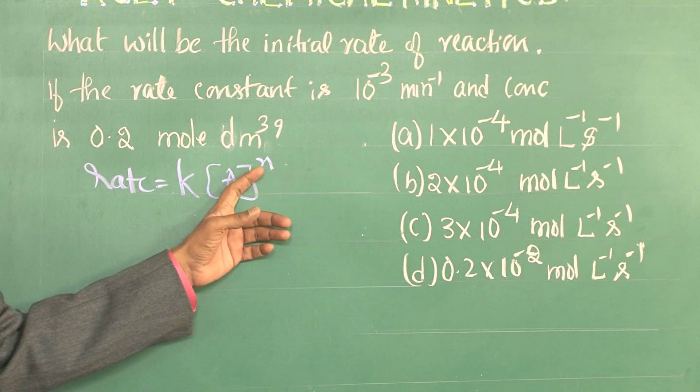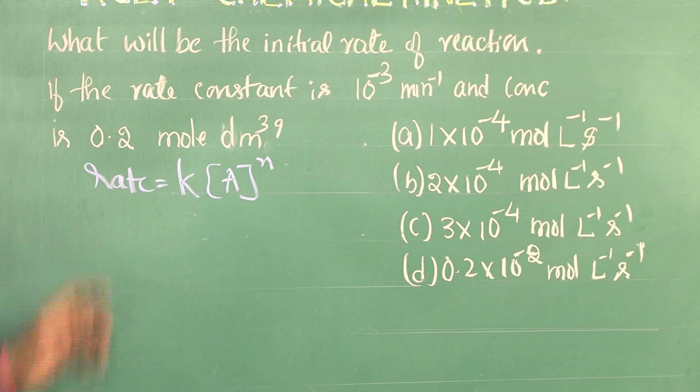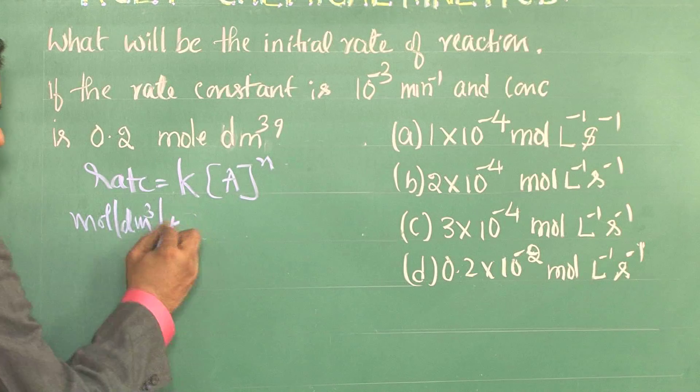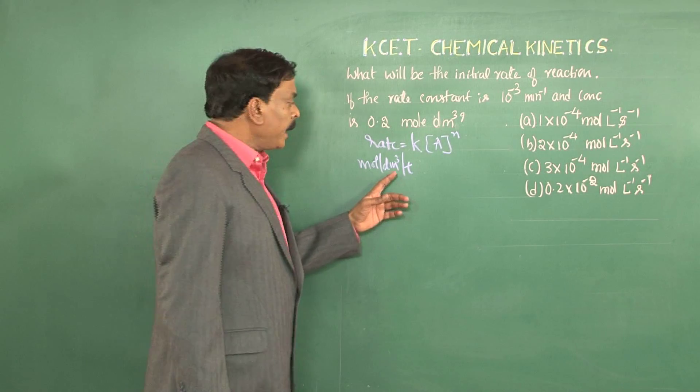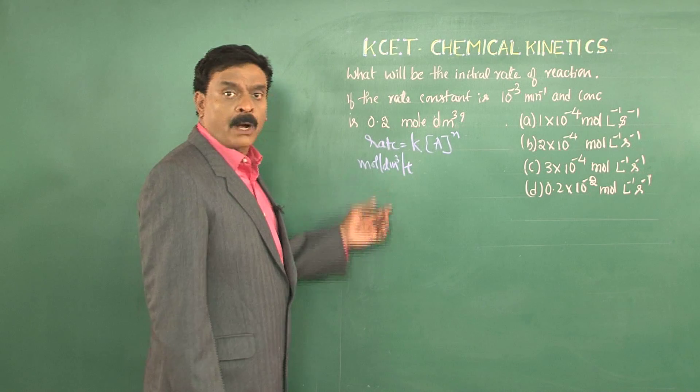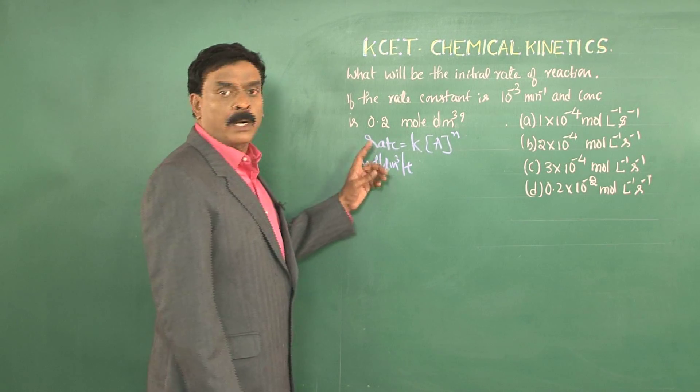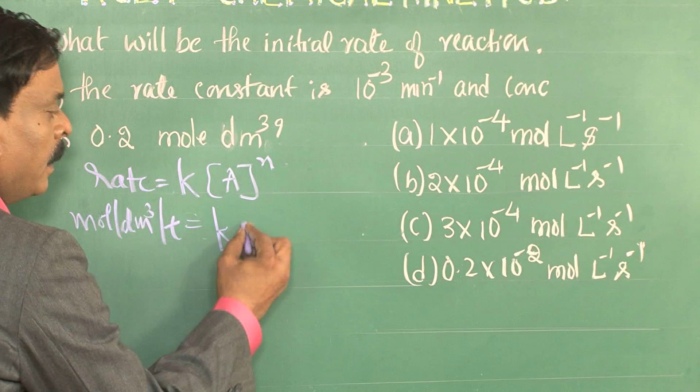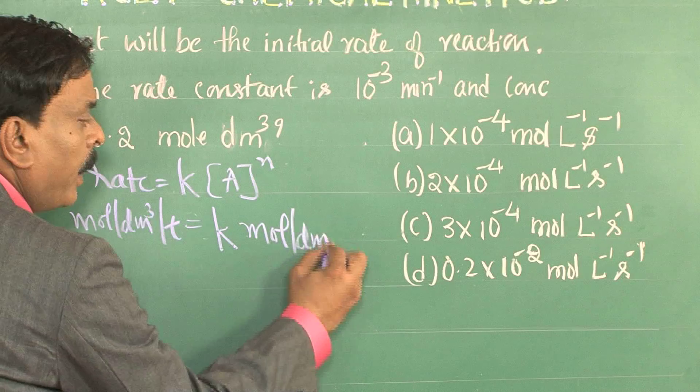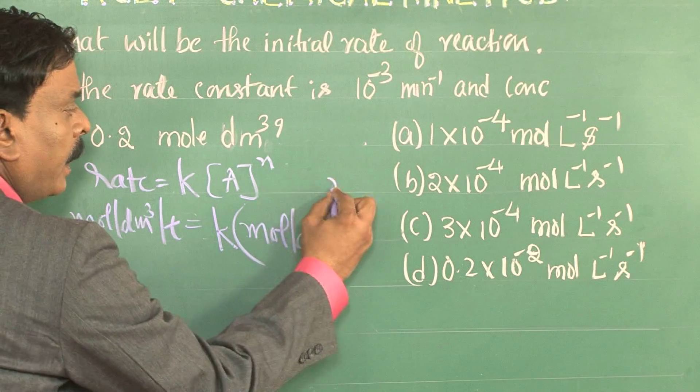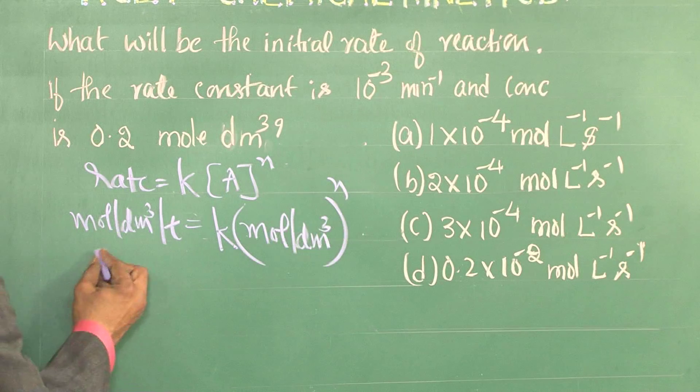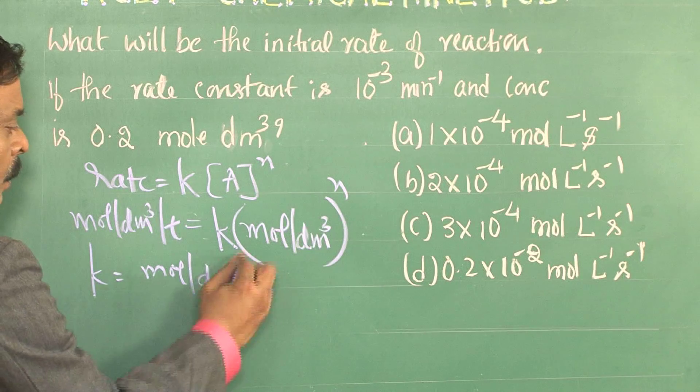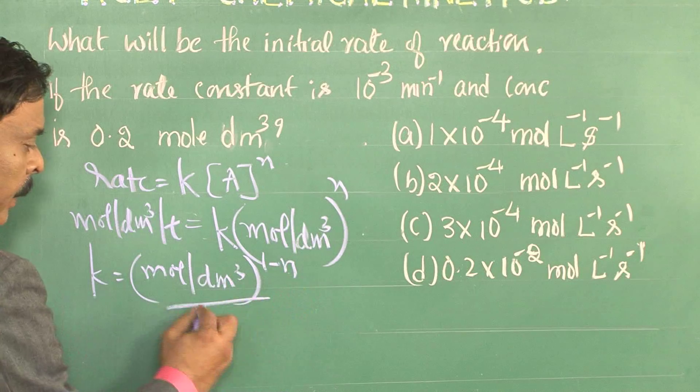The unit of rate of the reaction is mol per dm cube per time. This time could be either in seconds, minutes or hours, depending on how slow or how fast the reaction is. Now, this is equal to k into unit of concentration is mol per dm cube to the power n. So, the unit of k will be mol per dm cube to the power 1 minus n per time.